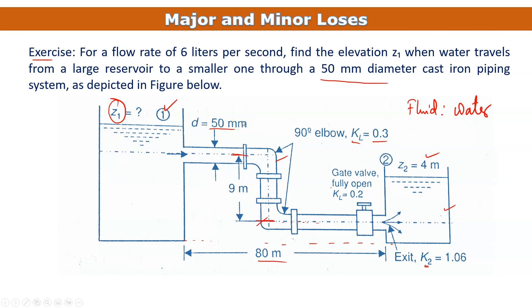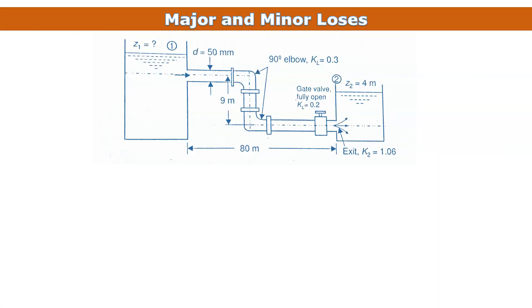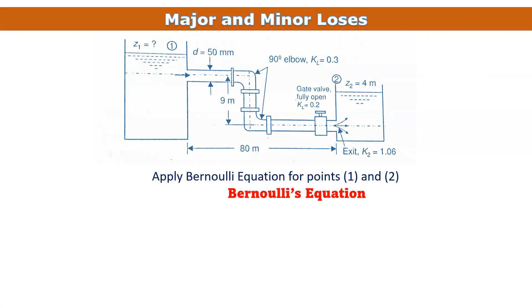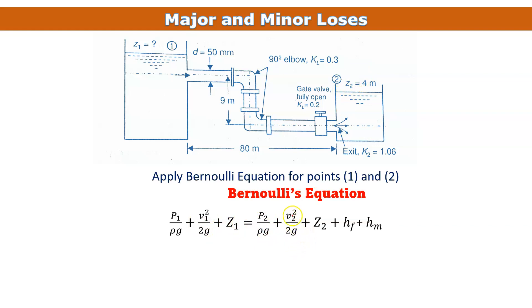First, we apply Bernoulli's equation between points 0.1 and 0.2. The Bernoulli equation is: p1/ρg + v1²/2g + z1 = p2/ρg + v2²/2g + z2 + hf + hm, where hf is major losses and hm is minor losses. Here p/ρg is pressure head (meters), v²/2g is kinetic head (meters), and z is potential head (meters).